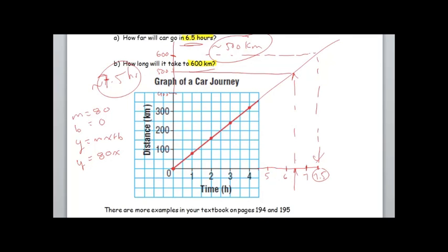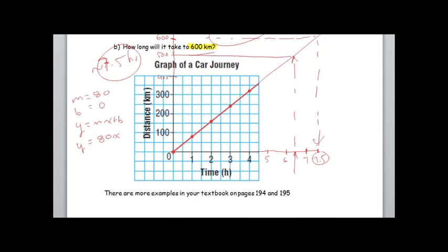So what this is representing: y is our distance, or I'm just going to put d for distance. That's going to be equal to 80 times time.